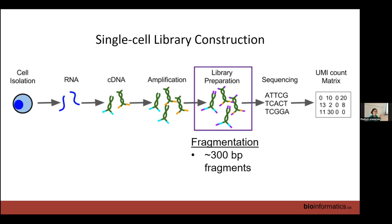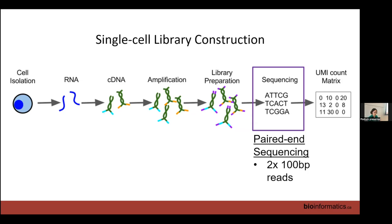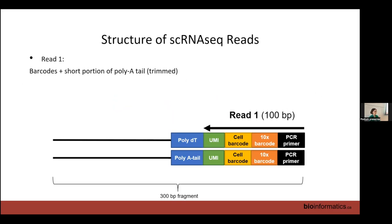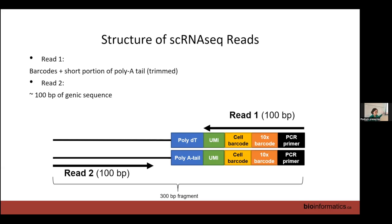To prepare libraries we fragment the DNA into 100 to 300 base pair fragments for Illumina sequencing. We do paired-end sequencing to get two 100 base pair reads. Read 1 is dedicated entirely to our barcodes; it runs into the poly-A tail, which is just a string of A's and gets trimmed away. Read 2 is in our transcript fragment — that's where we can see what gene the molecule belongs to.